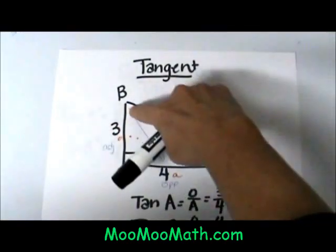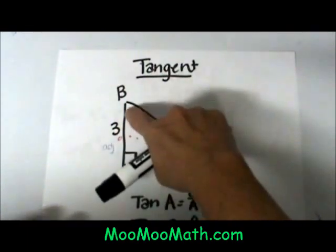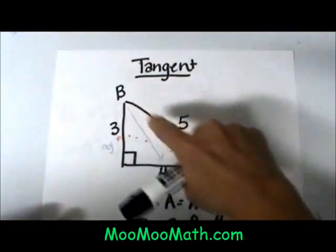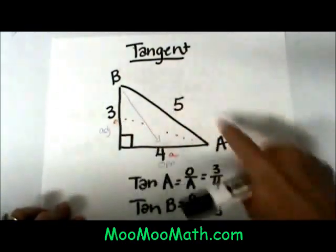Looking at that as a reference angle, my opposite side is 4 and my adjacent side is 3. So the tangent of this angle B is going to be opposite which is 4 over adjacent which is 3.